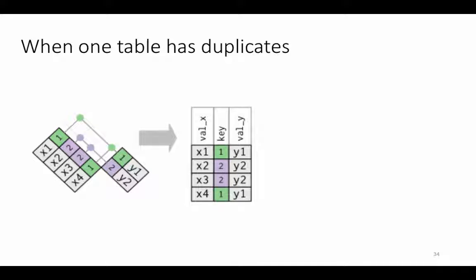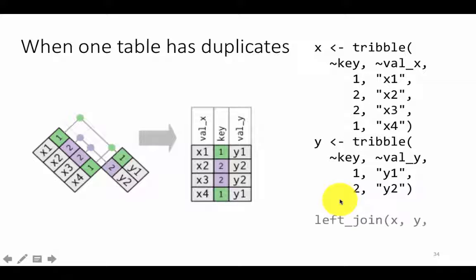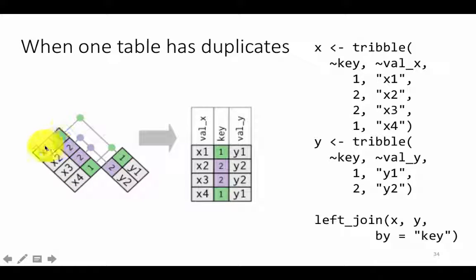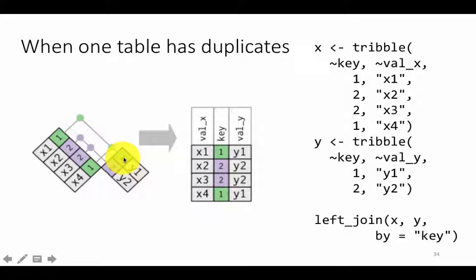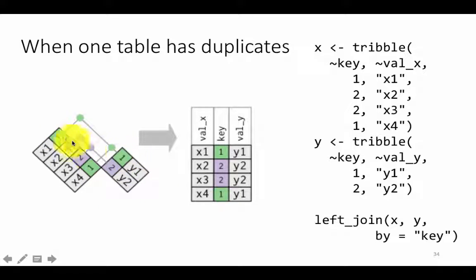Let's say we have the two tables defined here — it's easier to look at this from a diagrammatic point of view. You've got duplicates: X1-1, X2-2, X3-2, X4-1. This is the column on which we are performing the join. Think of this like the airlines table, where this is the FAA airline code and this is the actual name of the airline, and this is the flights table — the same airline can occur many times.